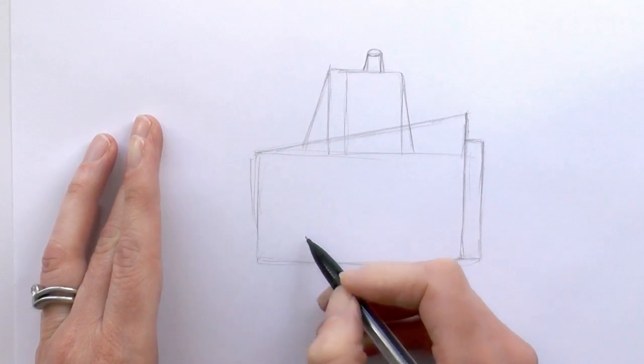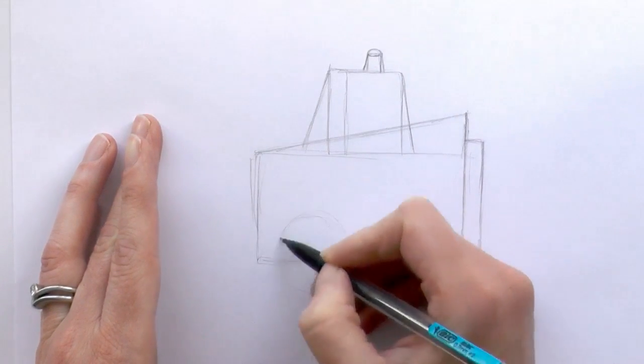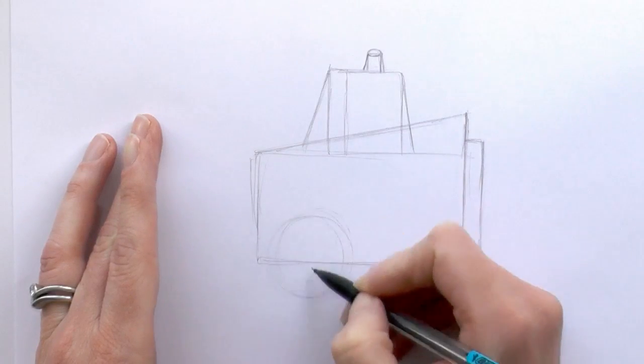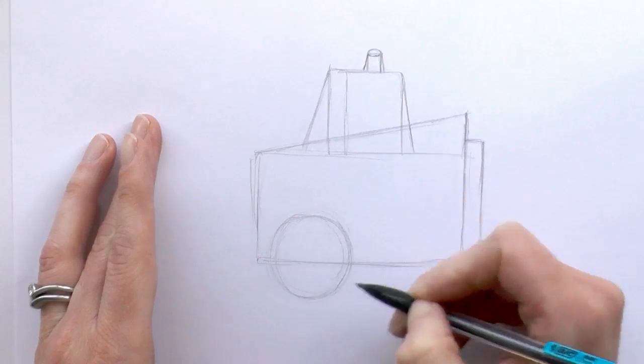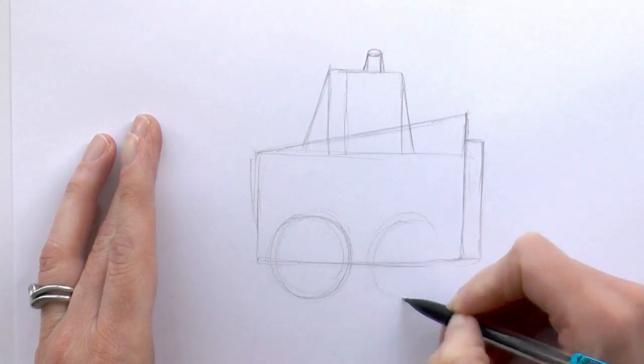And then we'll draw the wheels, so just put some circles in here. Kind of make them big in shape, just to make the digger look even more cartoony.